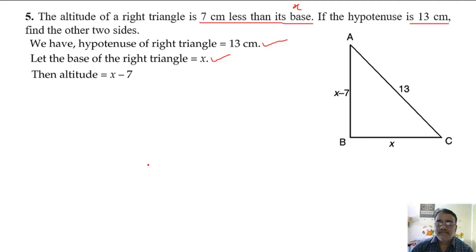13 squared equals x minus 7 whole squared plus x squared. First of all, you have to write in terms of sides. That is AC squared equals AB squared plus BC squared. Your answer is correct.